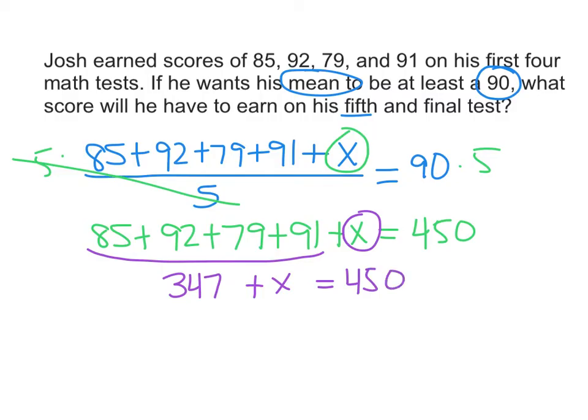And then the final step then is to subtract 347 from both sides. So we get X equals 450 minus 347. And we get 103.